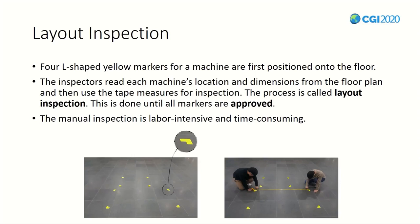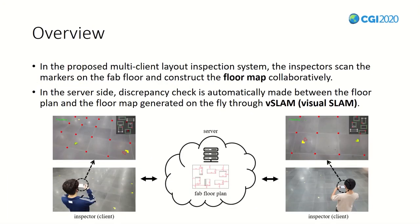As a result of the inspection, if the markers are correctly placed, they are defined as approved. If misplaced or missing, this is defined as disapproved. The field workers inspect all markers until all markers are approved. That's it for the background — now we are going to start talking about this paper.